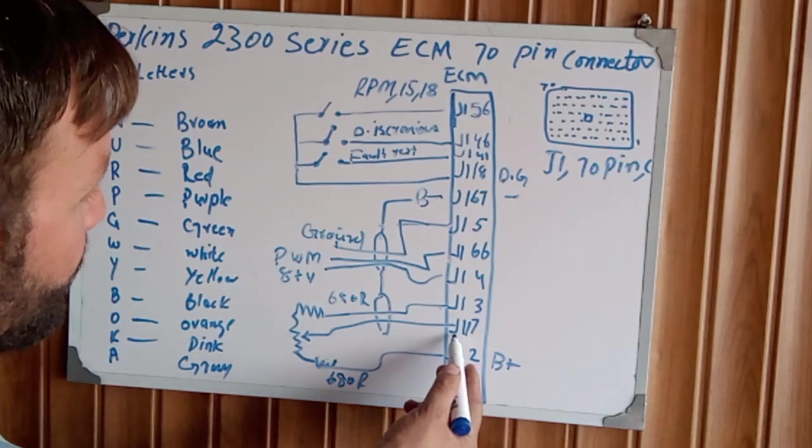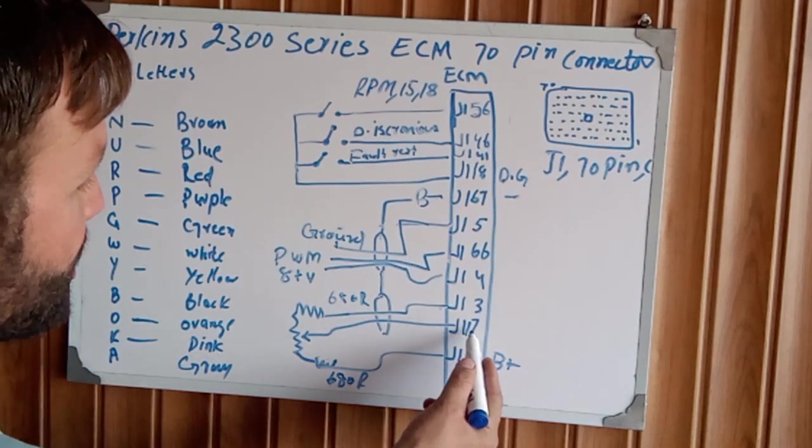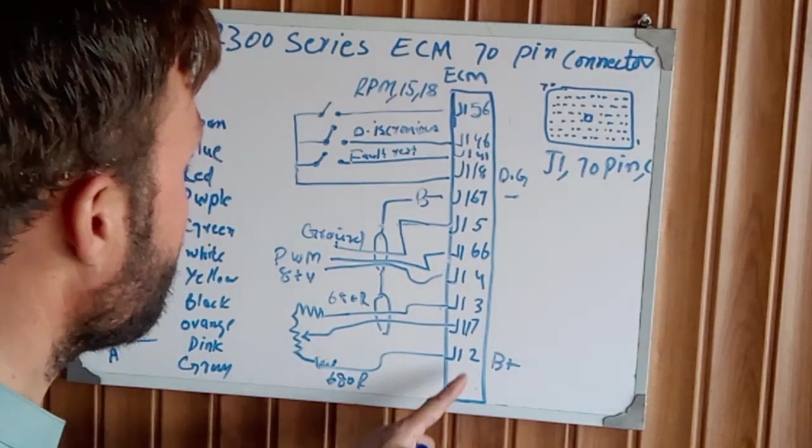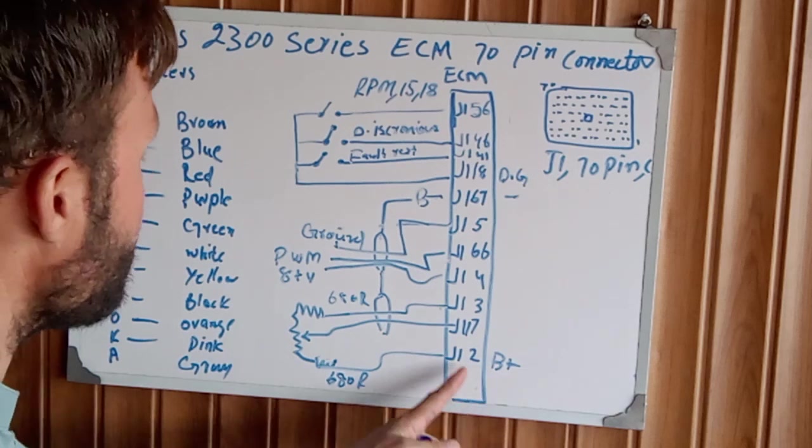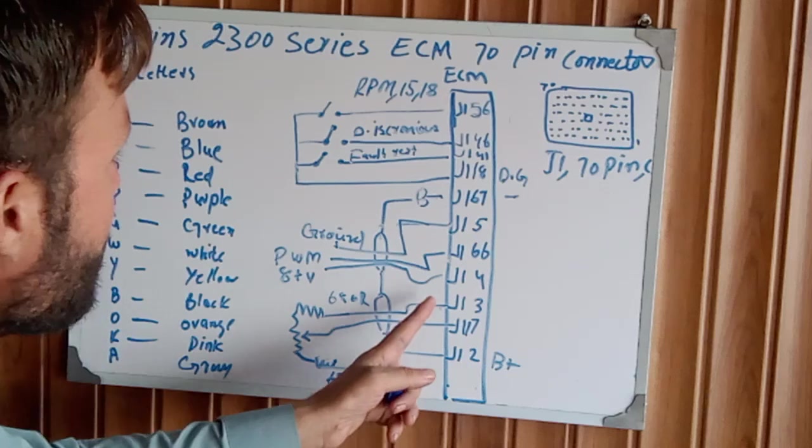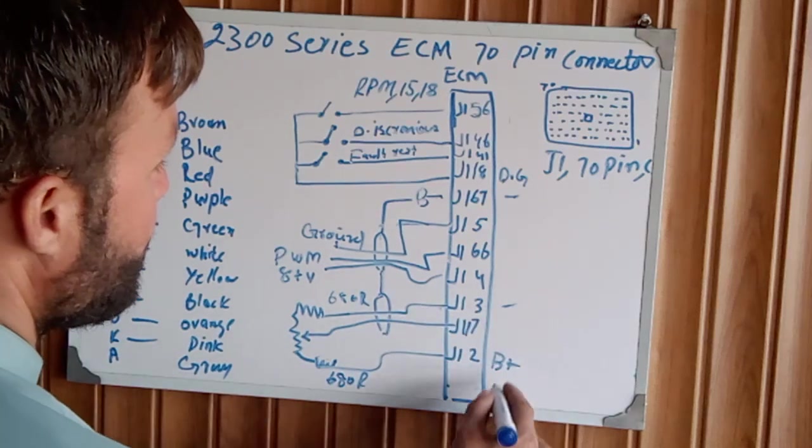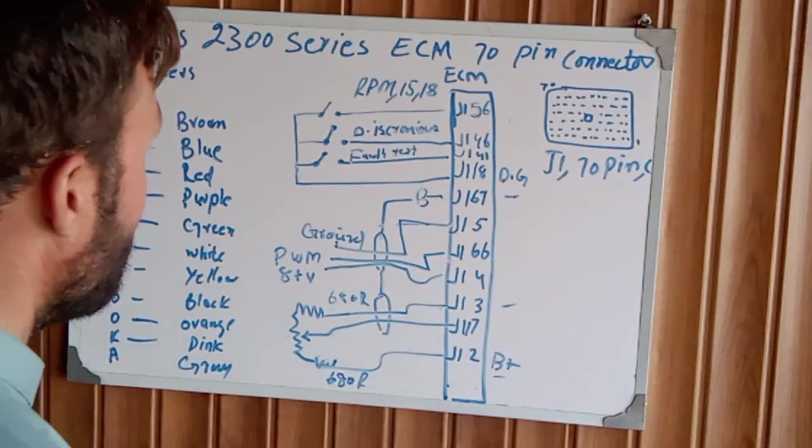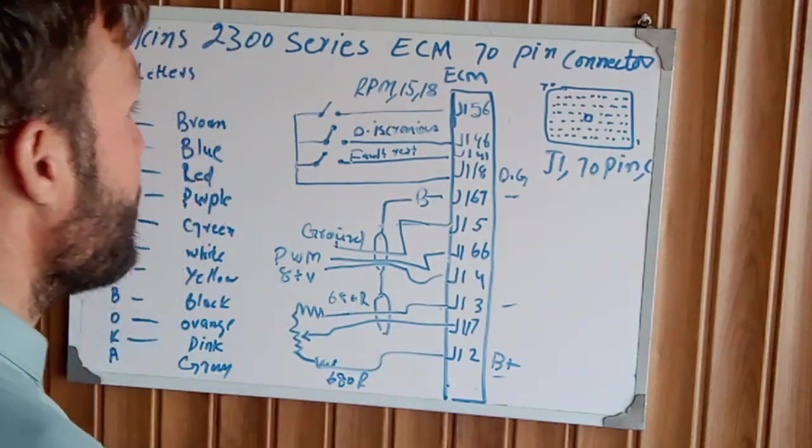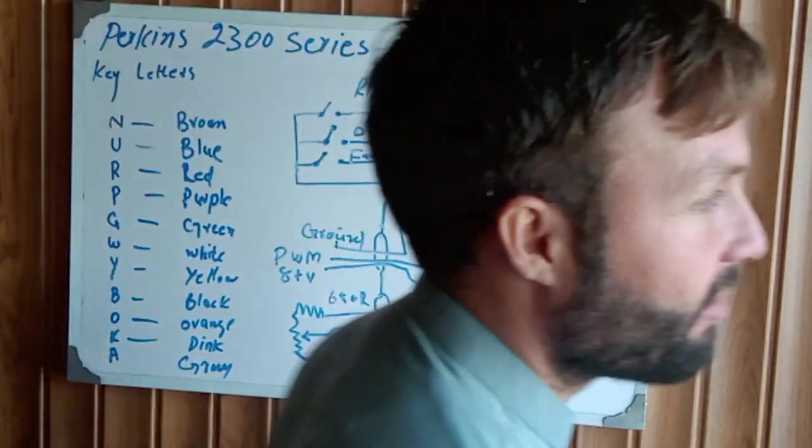The 1680 ohm resistor is between the potentiometer, and the last one is J1 12, which is potentiometer positive. This is the potentiometer negative, this is the potentiometer positive, and this is between the potentiometer.